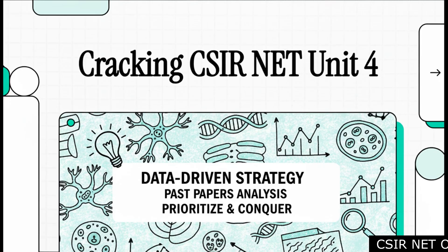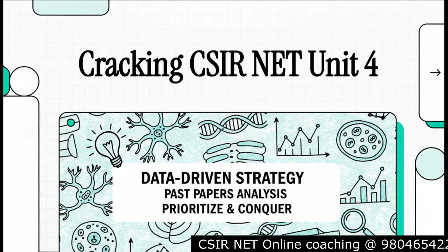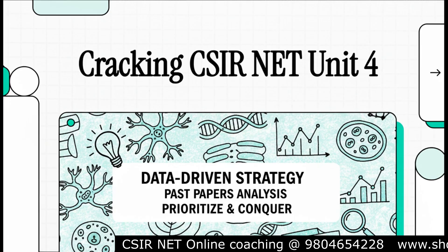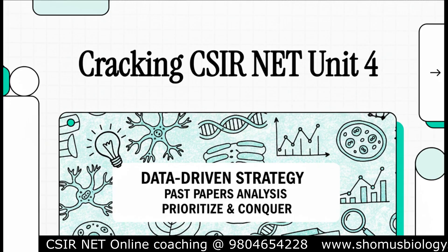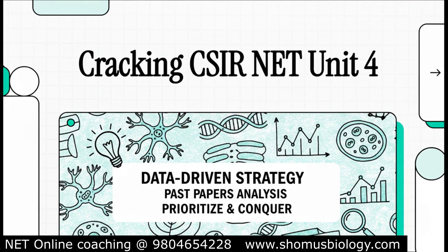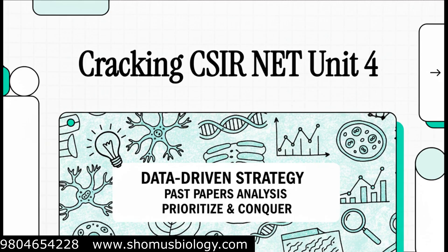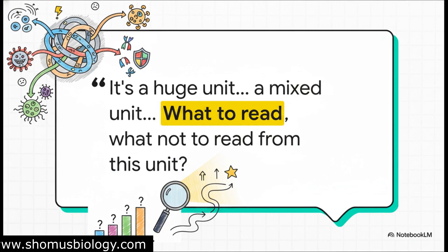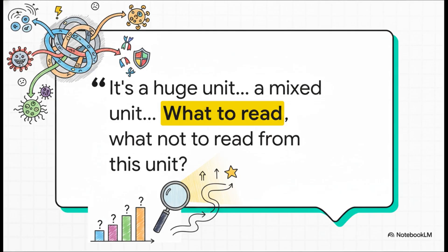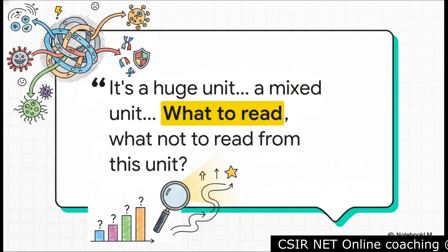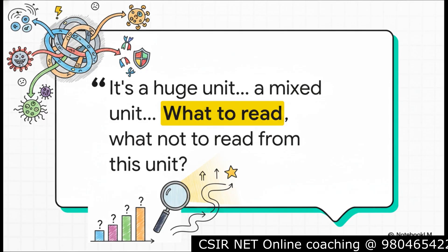If you're a CSIR-NET Life Sciences aspirant, you know exactly what I'm talking about — Unit 4. It's a beast, right? It's huge. It's intimidating, and for so many students it's a major source of stress. But today we're going to change that. We're going to crack this unit wide open using a really powerful, data-driven strategy from a deep-dive analysis of past exam papers. Unit 4 feels less like a syllabus and more like someone threw five massive, totally unrelated topics into a bag: cell signaling, immunology, cancer biology, host-pathogen interaction, and cellular communication. No wonder it's so overwhelming.